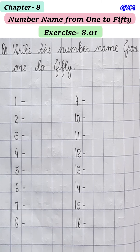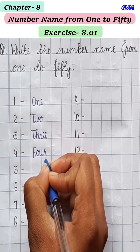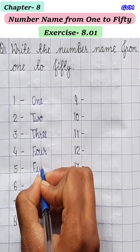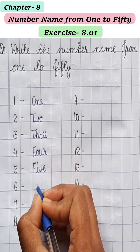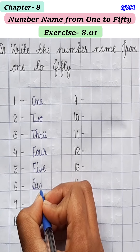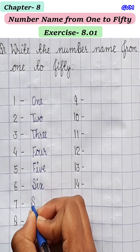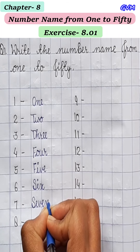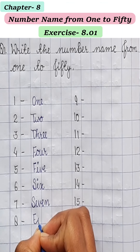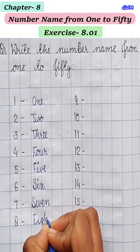1 की spelling लिखेंगे, number name लिखेंगे: O-N-E, 1. T-W-O, 2. T-H-R-E-E, 3. F-O-U-R, 4. F-I-V-E, 5. S-I-X, 6. S-E-V-E-N, 7. E-I-G-H-T, 8.